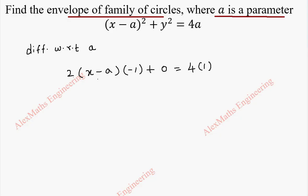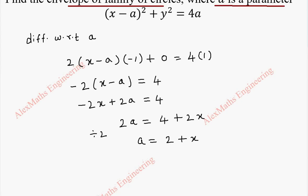So, I have to get what is a from this. So, this is 2(x-a) with a minus sign, equal to 4. We can multiply: -2x+2a=4. And 2a=4+2x. We shall divide everything by 2, so we get a=2+x.